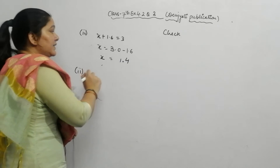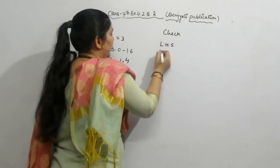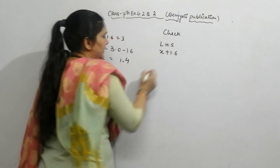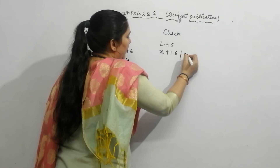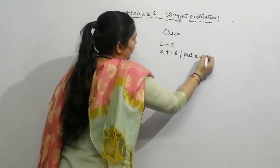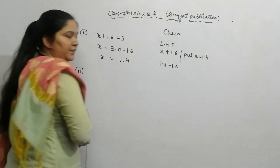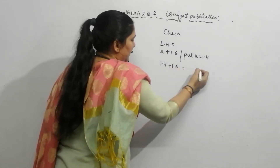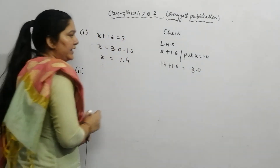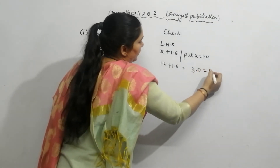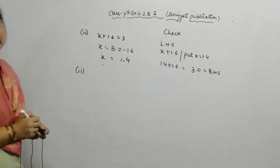Now check the result. Take the left-hand side: x plus 1.6. Put x equal to 1.4, so 1.4 plus 1.6. Adding: 4 plus 6 is 10, carry 1; 1 plus 1 is 2 and carry gives 3. So the result is 3, which equals the right-hand side. Left equals right, so our answer is correct.